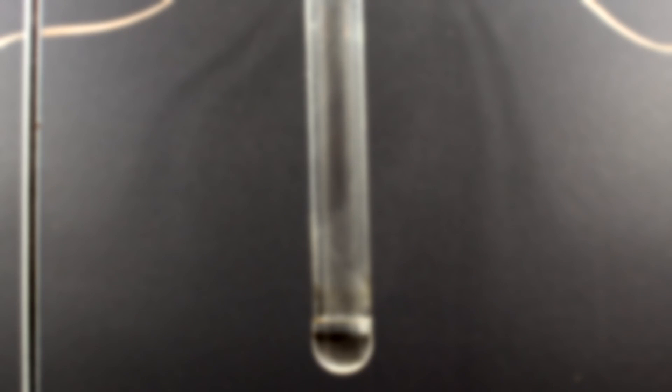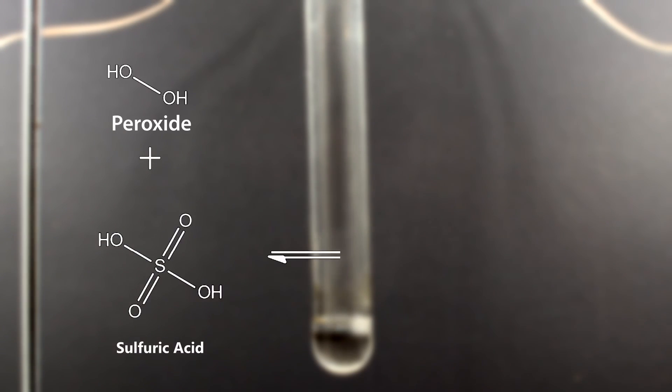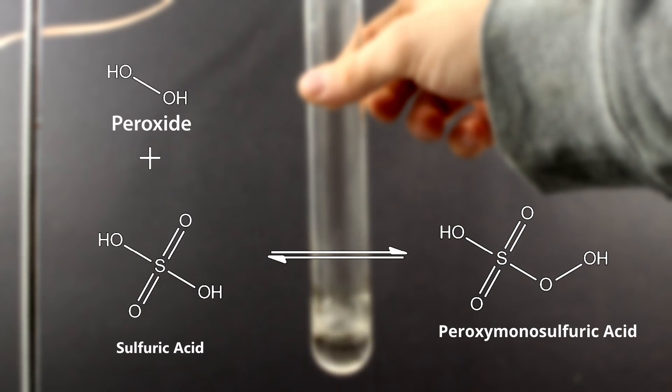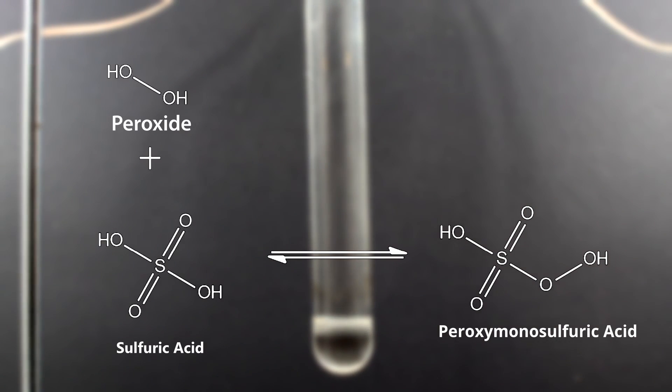So what's happening here? Well, when you mix the hydrogen peroxide with the sulfuric acid, they combine to form something called peroxymonosulfuric acid. How do they do this? I have no idea. I looked it up and I couldn't find anything. So, I don't know. Go ask your parents.